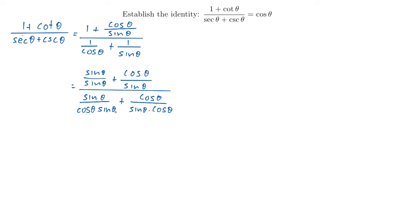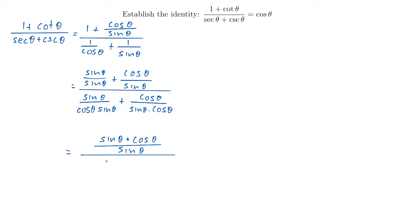So now the top has a common denominator of sine theta, and the bottom of our big fraction has a common denominator too, so we can do the addition. On top we're going to have a denominator of sine theta, and the numerator of that top fraction is going to be sine theta plus cosine theta, divided by just sine theta. And for our bottom half of the fraction, we're going to have sine theta plus cosine theta divided by its common denominator, which is cosine theta times sine theta.